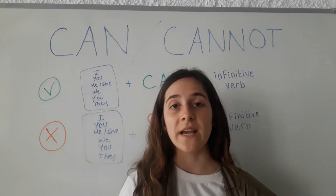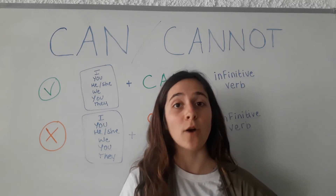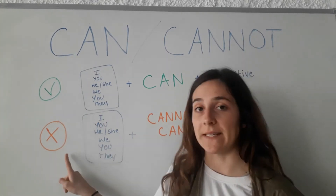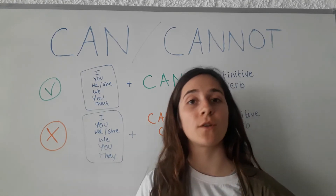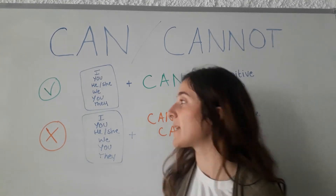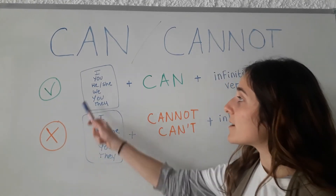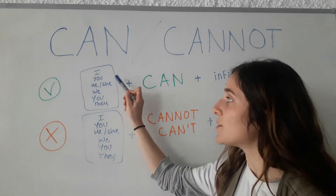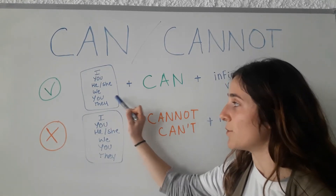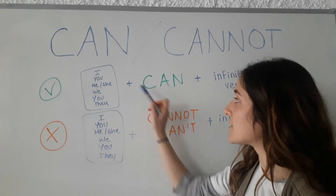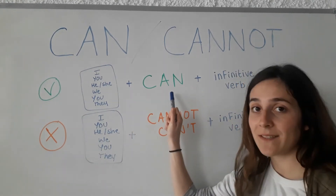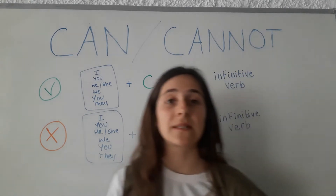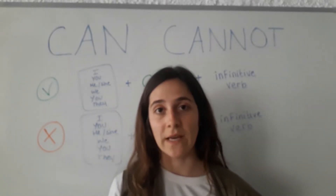Now we will see how to create a sentence — how to form a phrase. For the affirmative and negative forms, it works the same way. First, you use the pronoun — I, you, she, we, you, they — plus can, plus the infinitive verb. It means that the verb is not conjugated.